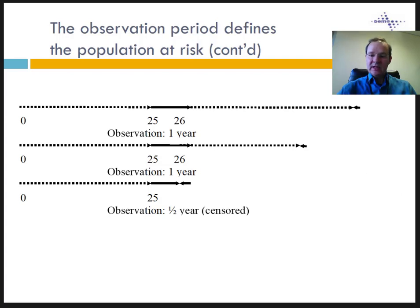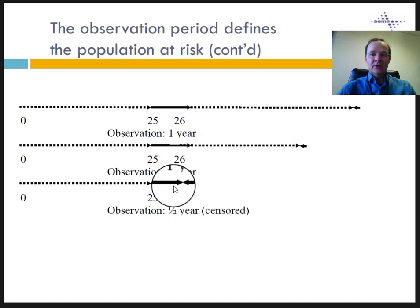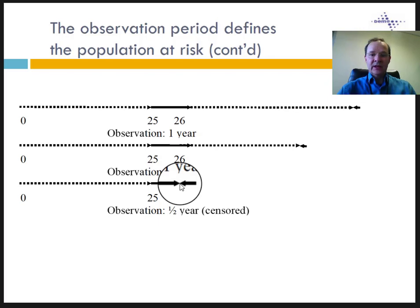The advantage of reducing the time interval is that it reduces the number of individuals that are censored, because they do not live through the entire interval. In our example, from birth to the age of 25, the three individuals were observed without censoring until the end of each one-year interval. There is still a censored observation during the 26th year of life for the youngest individual, but the censoring is limited to that interval only. From 26 to 30, there will be no censoring for the two individuals followed up until age 30. Nevertheless, censoring is still present — how do we deal with it?